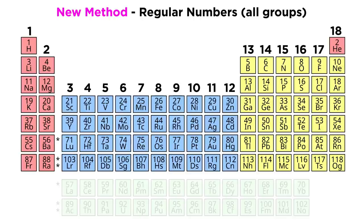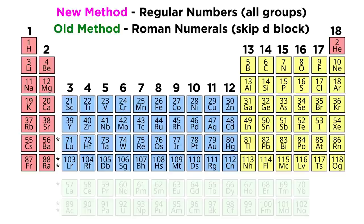However, the newer method simply uses regular numbers and includes the transition metals, so we have groups 1 through 18 labeled like this from left to right. We will be using this newer method in these tutorials, but it is worth at least mentioning the other method so as to save yourself any confusion should you run across this in your studies.